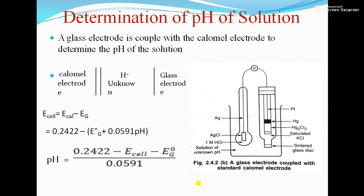For the determination of pH of a solution, we require two electrodes: one indicator electrode (glass electrode) and one reference electrode (calomel electrode). The calomel electrode acts as the reference electrode — if we use saturated KCl solution, its E⁰ value is 0.2422 V. The glass electrode acts as the indicator electrode. This combination of glass electrode and calomel electrode is used for pH measurement.